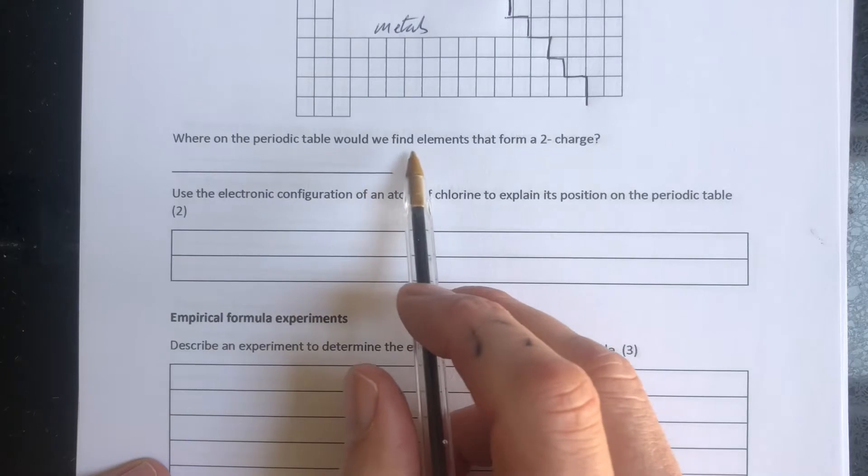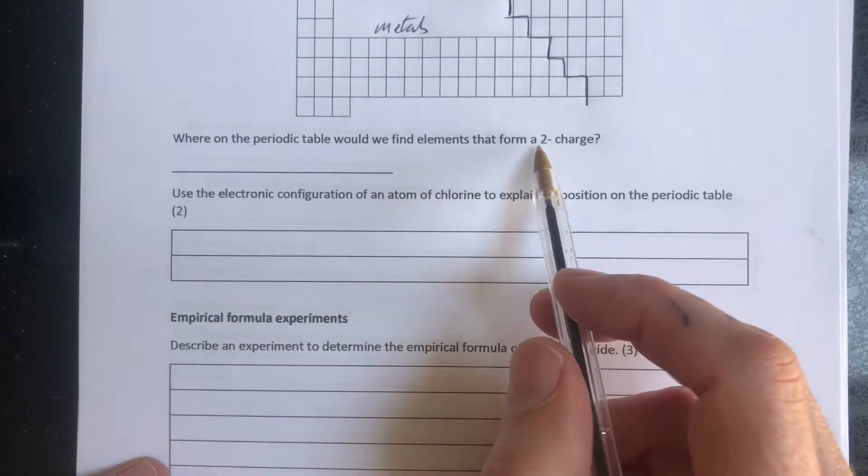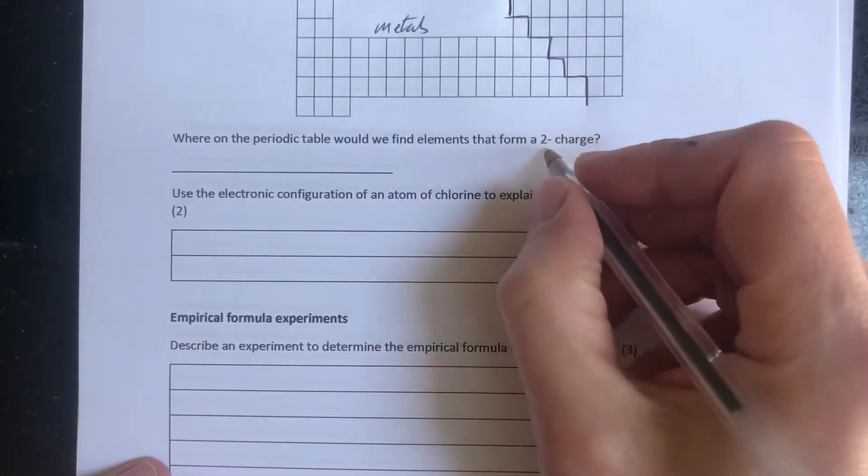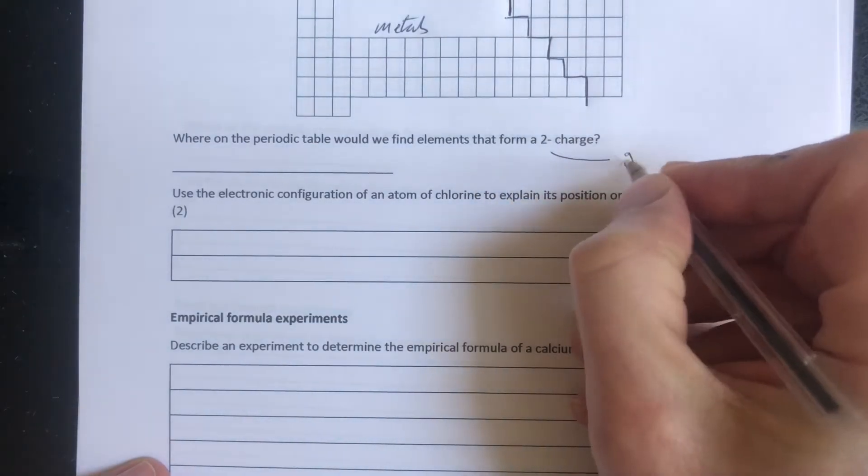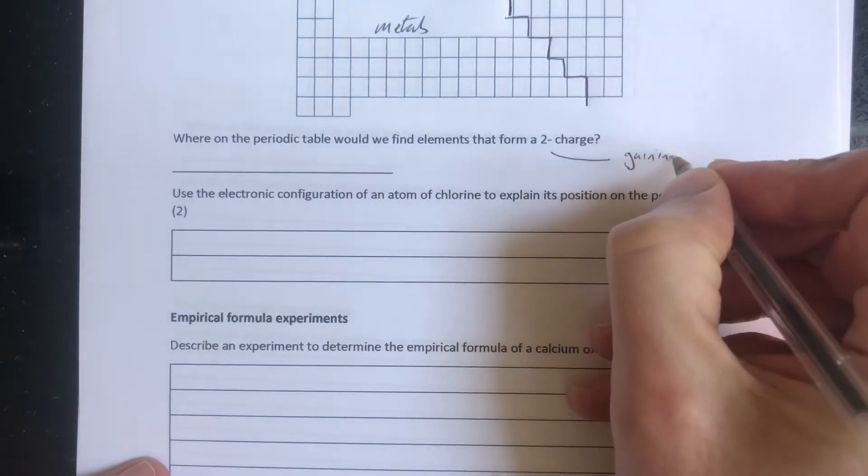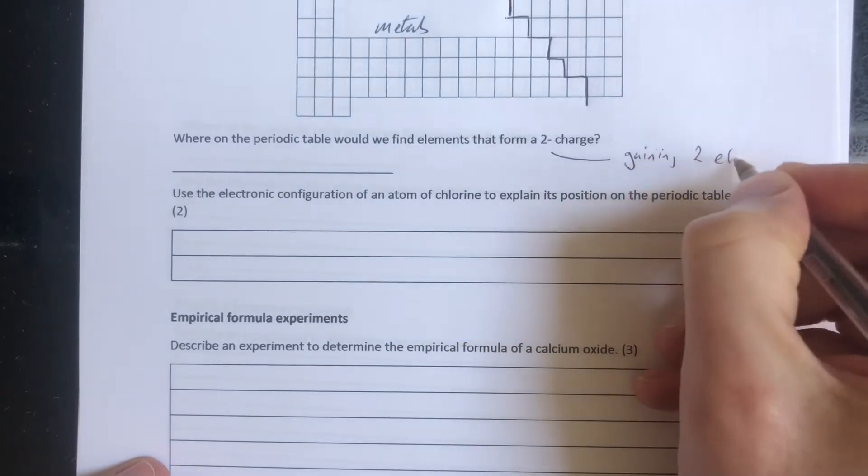Where on the periodic table would we find elements that form a two-minus charge? Okay, so if it's got a two-minus charge, it's got that by gaining two electrons.